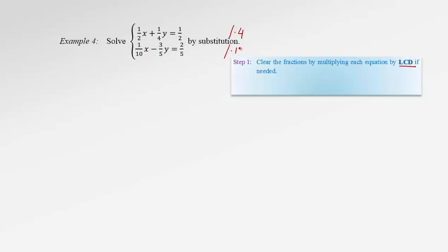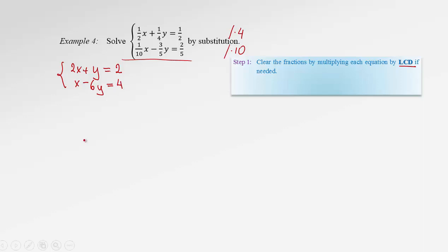To clear fractions in the second equation, multiply everything by 10. Our new system of equations will be: 4 divided by 2 is 2 times x, plus 4 divided by 4 is 1y, equals 4 times one-half is 2. For the bottom equation, 10 times one-tenth disappears, leaving just x, minus 10 divided by 5 is 2 times 3 giving 6y, equals 10 divided by 5 again times 2, altogether 4. So we've brought this example to the same form as the previous one.